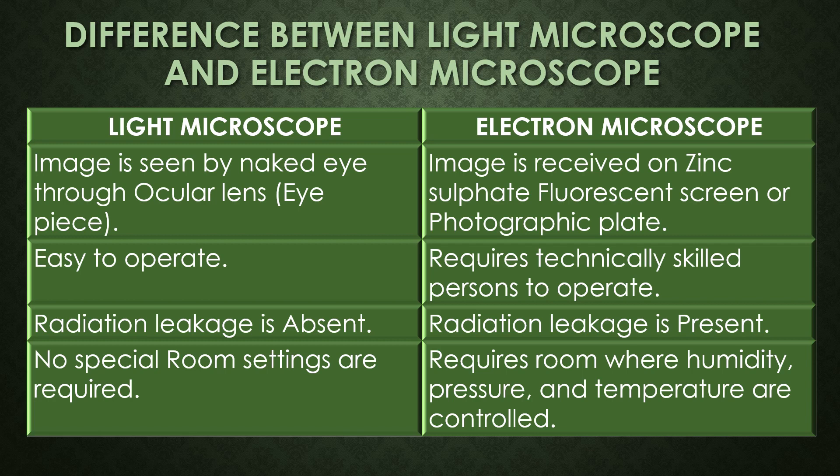In the electron microscope the image is received on a zinc sulphate fluorescent screen or a photographic plate. The light microscope is easy to operate, but the electron microscope requires a technically skilled person to operate. Radiation leakage is absent in the light microscope but present in the electron microscope. The light microscope does not require special room settings, but the electron microscope requires a room where humidity, pressure, and temperature are controlled.